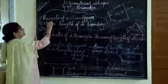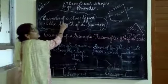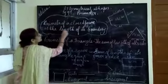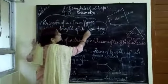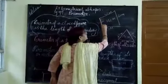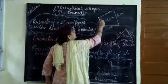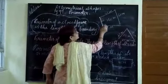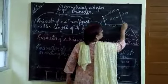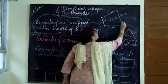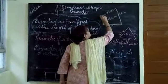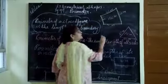Now, what is perimeter? Perimeter of a closed figure is the length of its boundary. Suppose this is the figure: from here to here it is 3 centimetres, here to here it is 5 centimetres, here to here it is 6 centimetres, and here to here it is 4 centimetres.